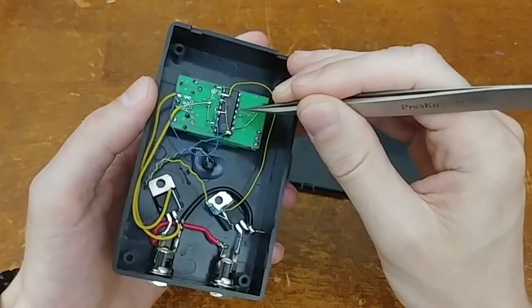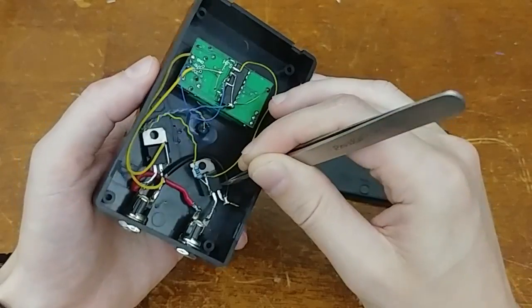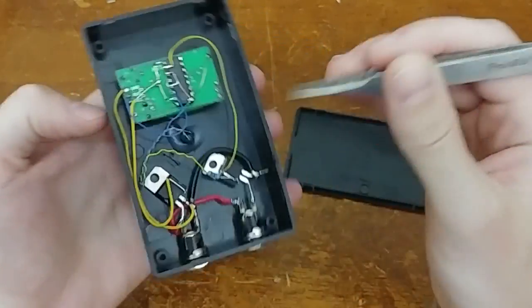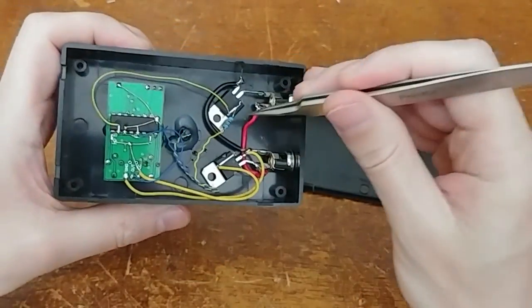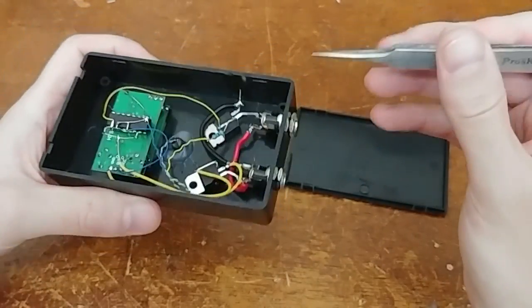And when the output of this is high, it tells a MOSFET, an N-channel MOSFET down here, I think that's what this one is, it tells the N-channel MOSFET to allow current to flow from the input jack to the output jack.